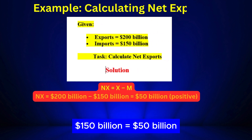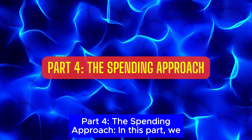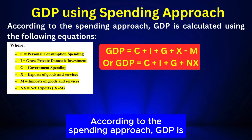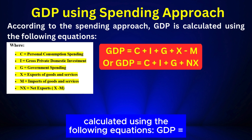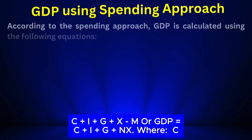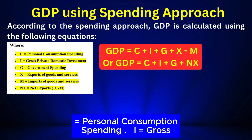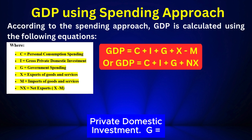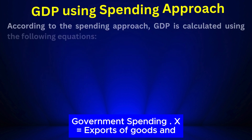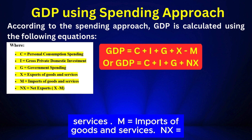Part 4: The Spending Approach. According to the spending approach, GDP is calculated using: GDP = C + I + G + X − M, or equivalently GDP = C + I + G + NX, where C equals personal consumption spending, I equals gross private domestic investment, G equals government spending, X equals exports of goods and services, M equals imports of goods and services, and NX equals net exports.